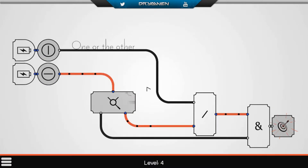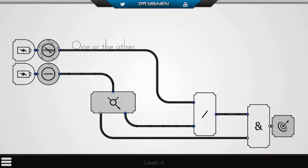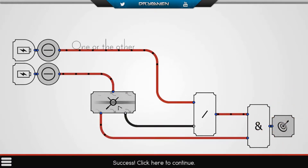One or the other — level four. Both batteries, only one target. This is an AND gate: active when both inputs are powered. And then this is an OR: it's active when at least one input is powered. We need to power both and then switch this one. There we go, all done.